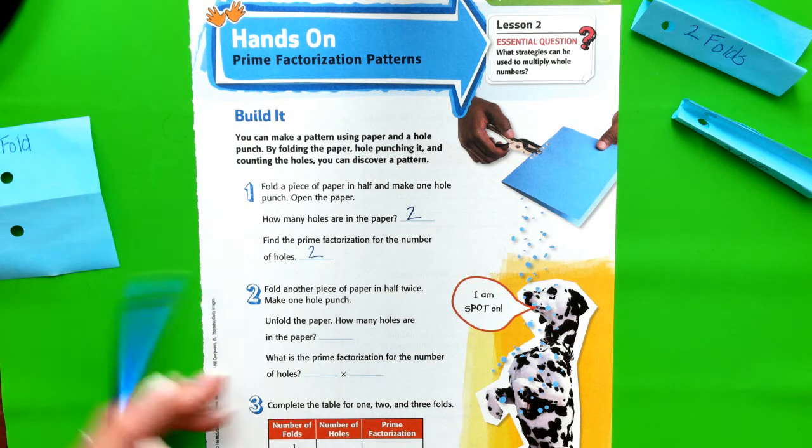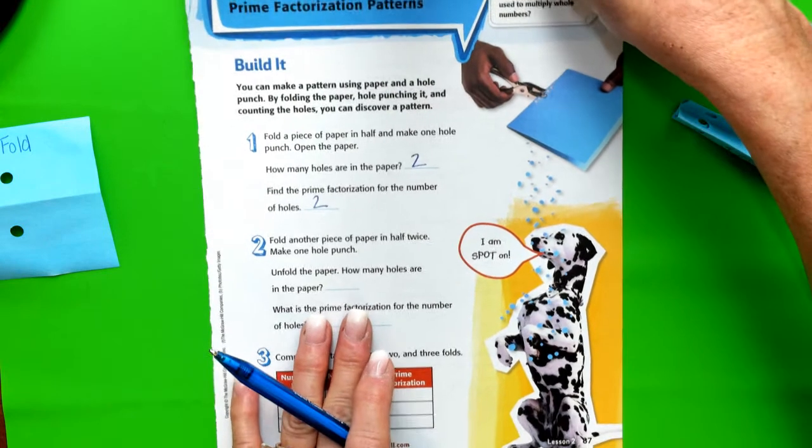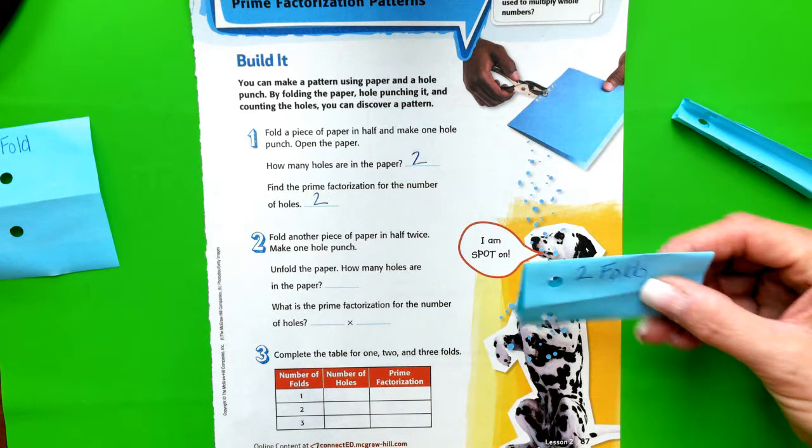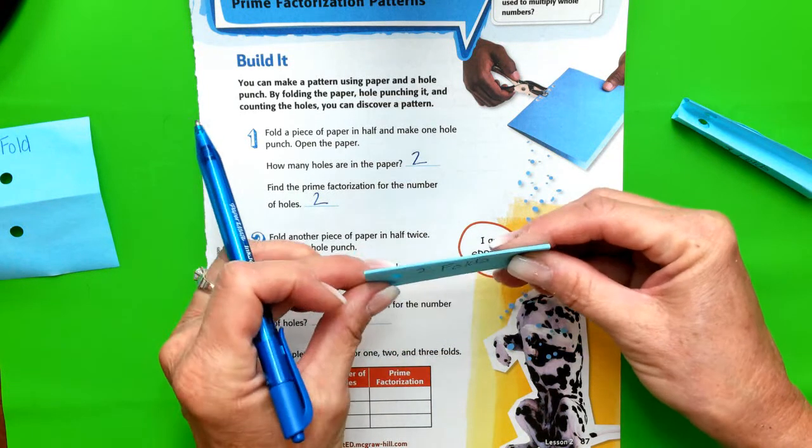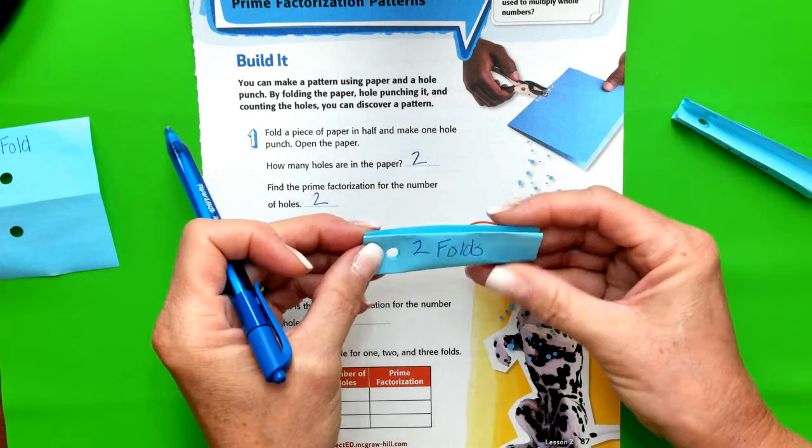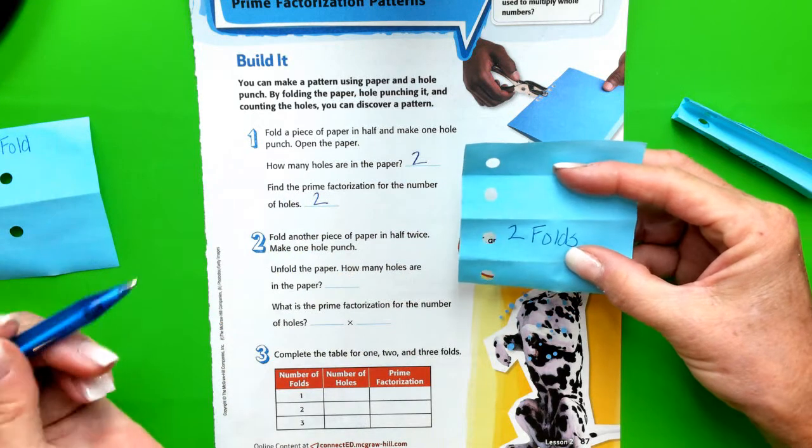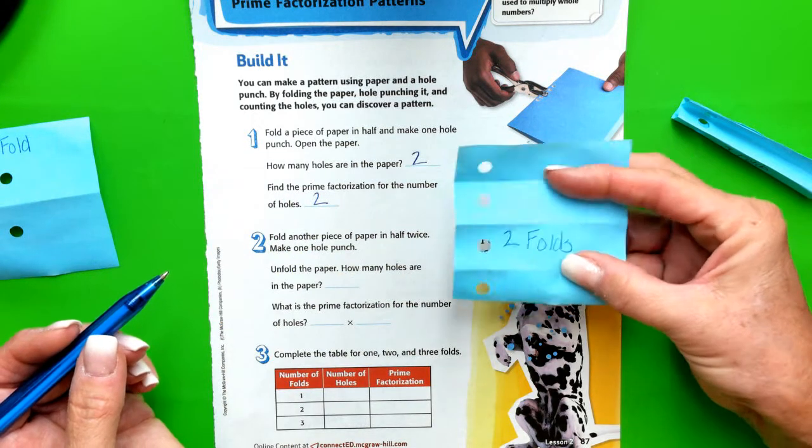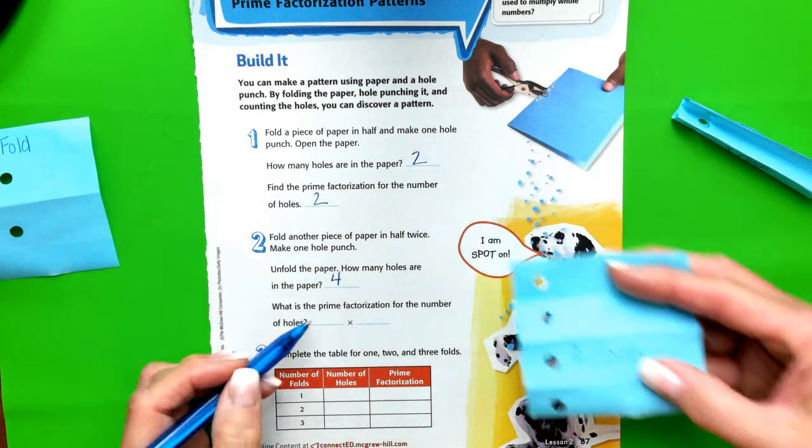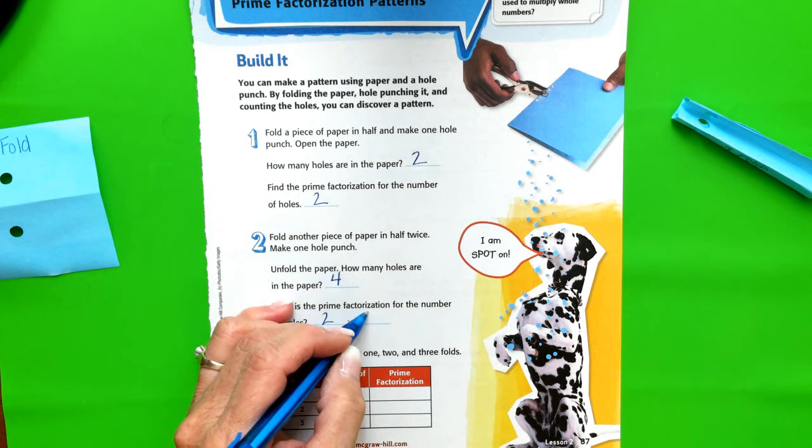Step 2 says fold another piece of paper in half twice. Let's apply that. So here I've folded it in half, and then I fold it in half again. So I have two folds. And then I hole punch and I open, and you guessed it, there are four holes in the paper. And how do we factor four? Well, that becomes two times two.